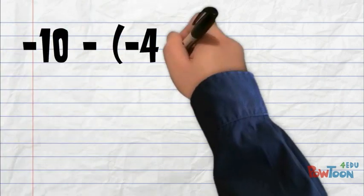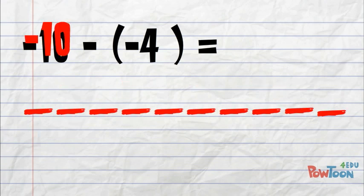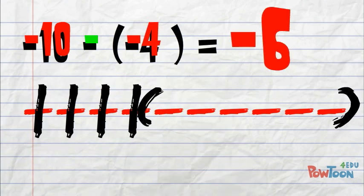What about negative 10 minus negative 4? We start with 10 negative tiles. We then take away 4 negative tiles. Our answer, negative 6.